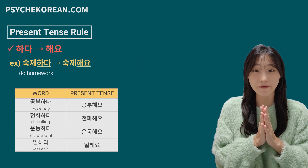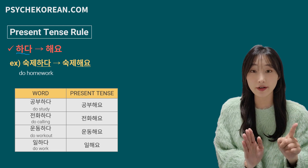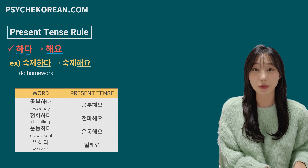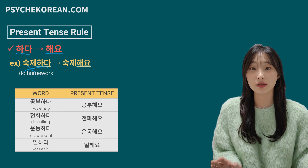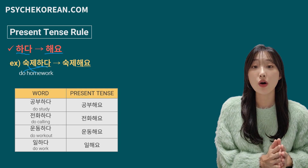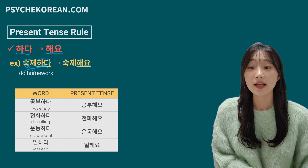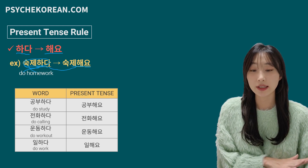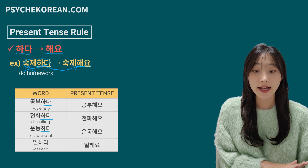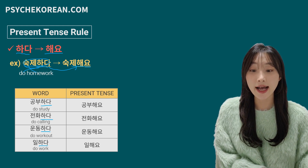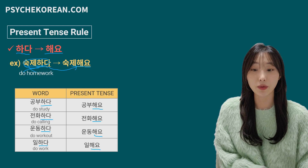The last part is my favorite because it's so easy to remember — there is only one rule: if the word ends with 하다, it is conjugated to 해요. For example, 숙제하다 — 하다 means 'do' and 숙제 means 'homework,' so in Korean it's one verb. 하다 is conjugated to 해요. There are no exceptions. Other examples: 공부하다, 전화하다, 운동하다, 일하다 — they all end with 하다, so all become 해요.